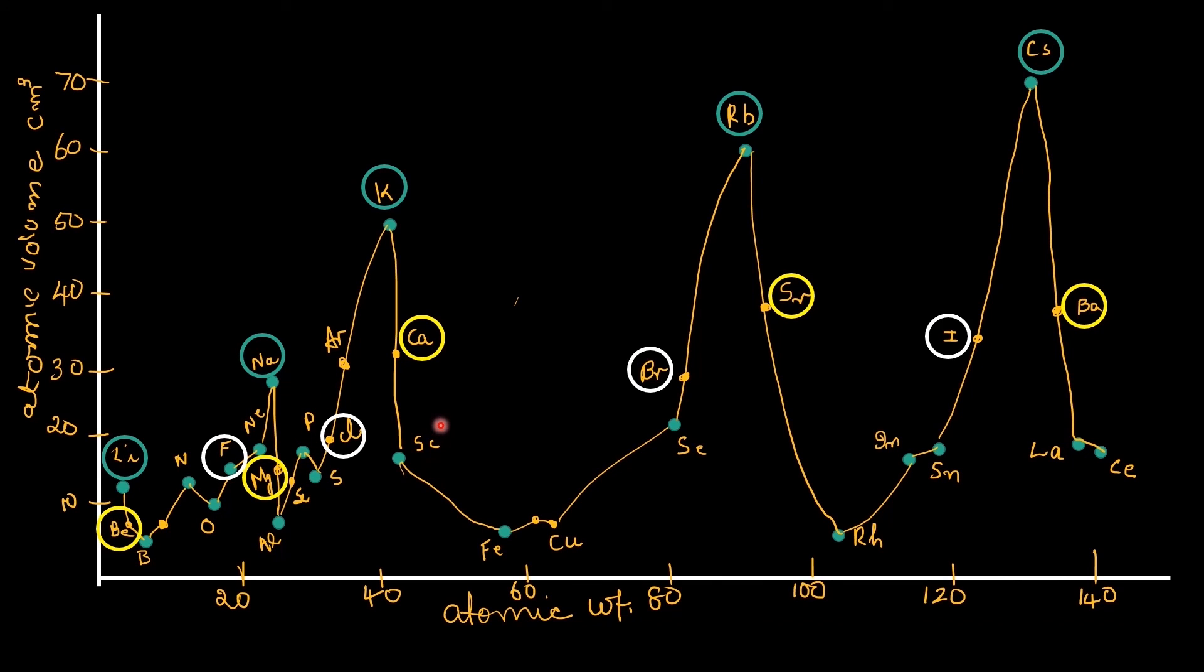Lothar Meyer and Mendeleev worked on classification of elements almost at the same time. But Mendeleev was able to publish his work earlier than Lothar Meyer. So Lothar Meyer's work did not gain much attention. Moreover, Mendeleev's periodic table was easier to follow. We will discuss Mendeleev's periodic table separately in the next video.